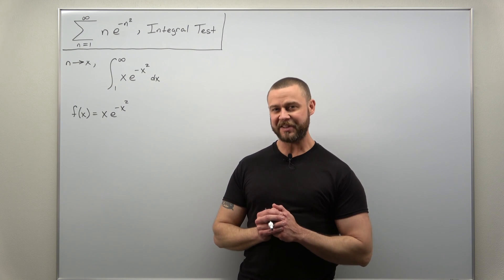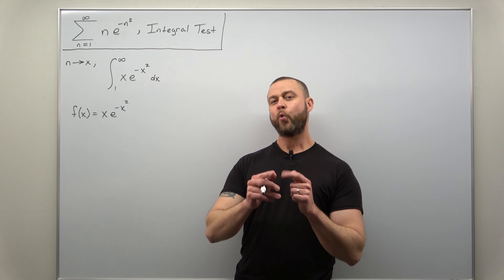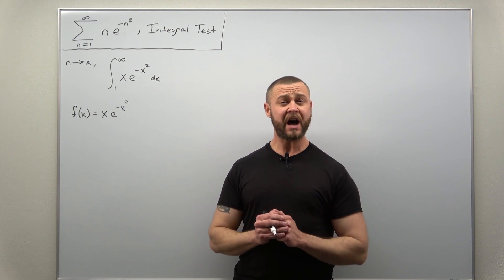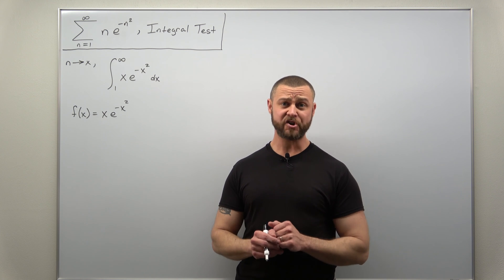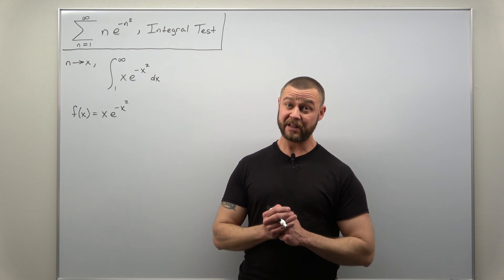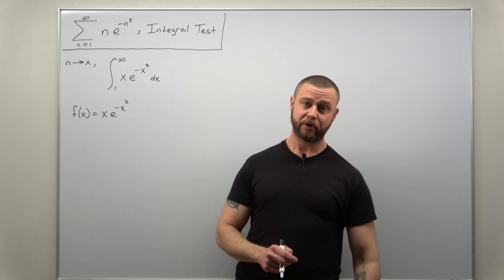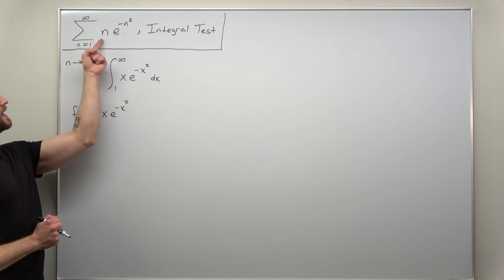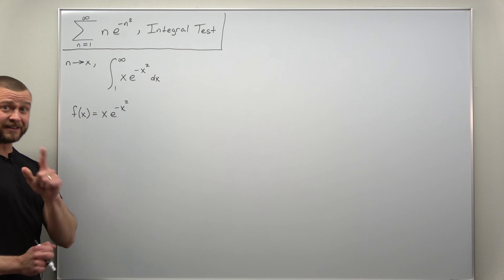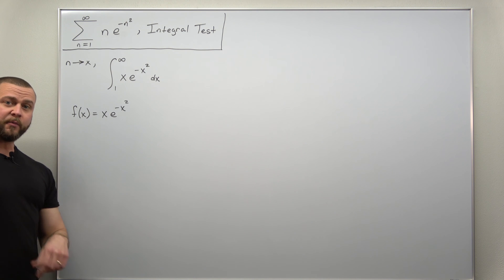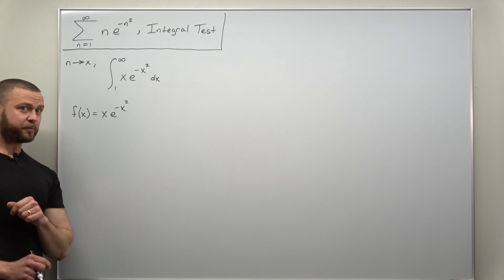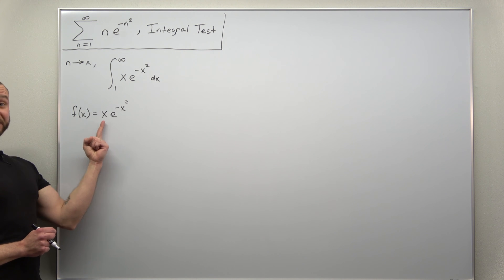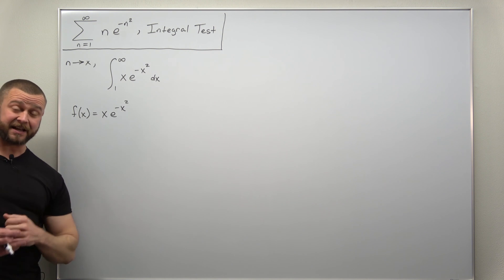Greetings fellow mathematicians. We're going to take a look at an example of applying the integral test where it's not obvious that our function is decreasing. We have our infinite series with term n times e to the negative n squared, and we can easily translate that into the improper integral where the function of x is x times e to the negative x squared.